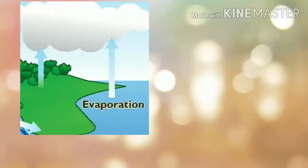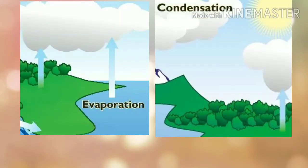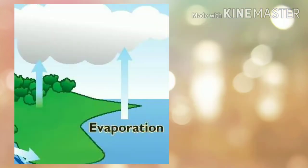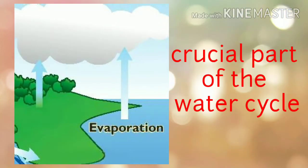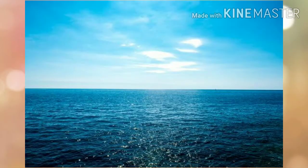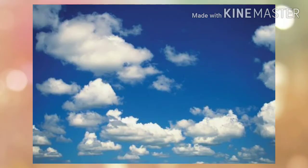Evaporation and condensation are forms of physical change in matter. Evaporation is a crucial part of the water cycle. Water from all areas on Earth will not be recycled if they will not evaporate into water vapor as clouds in the sky.